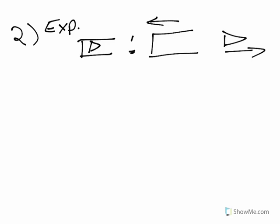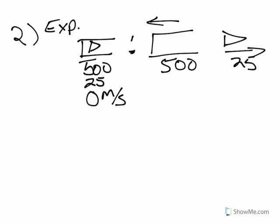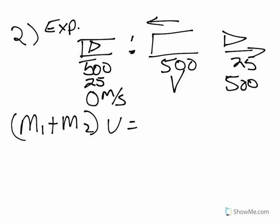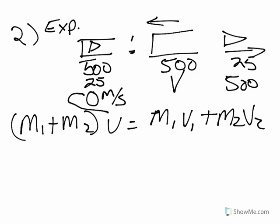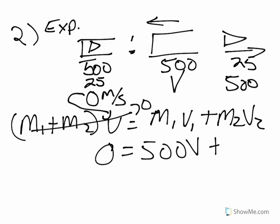Before the explosion, the cannon mass is 1000 and the shell mass is 25, and they're separated after. We know the velocity before is 0 meters per second. After, we're looking for the recoil velocity of the cannon and we know the shell is going 500 meters per second. We use the explosion formula: M1 plus M2 times V equals M1V1 plus M2V2. Since the initial velocity is 0, the whole left term is 0. So we get 0 equals 1000V plus 25 times 500.